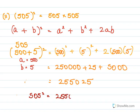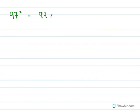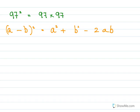The next sum will find the value of 97², which means it is 97 × 97. For this we will use the formula (a - b)² = a² + b² - 2ab. For 97, we are going to write it as (100 - 3)², so 100 would be our a and 3 would be our b.